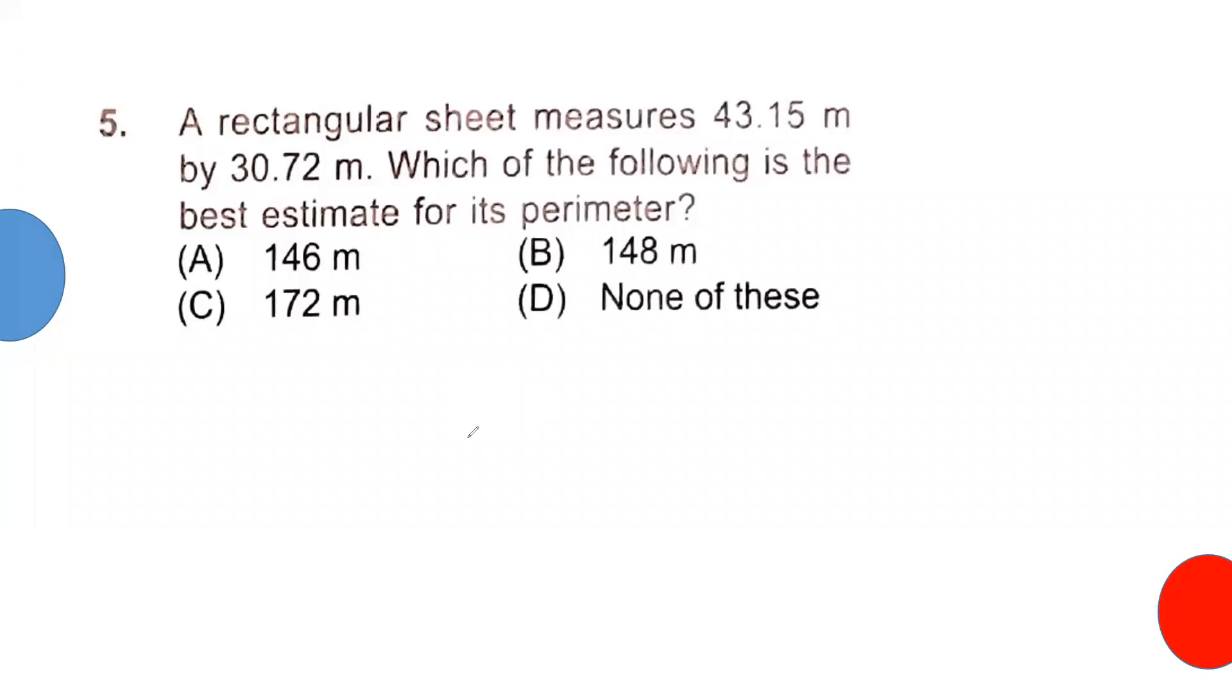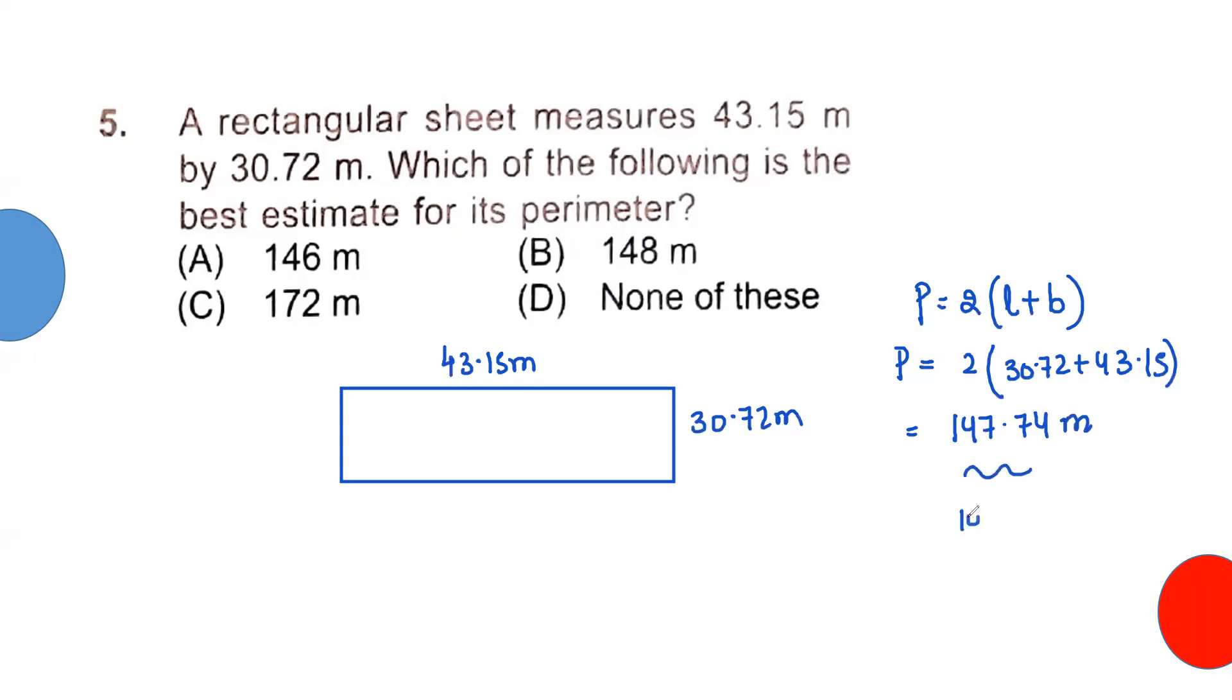Now see this question. Which of the following is the best estimate of the perimeter? You have a rectangle given. This measures 43.15 meter and this measures 30.72 meter. Perimeter is nothing but 2 times L plus B. Add both, double it. 2 times (30.72 plus 43.15) gives you 147.74 meter. If you round it off, you got 148 meter. And here goes the answer.